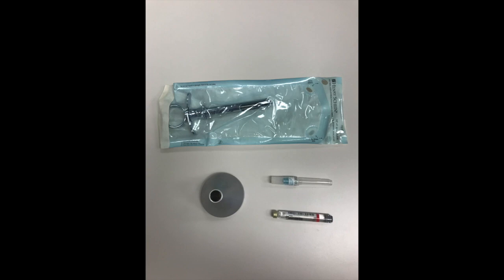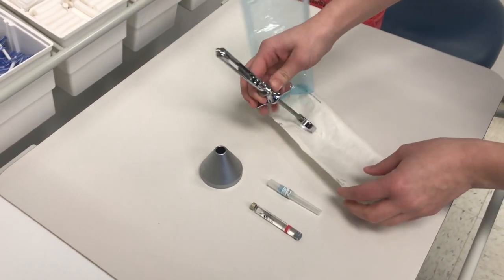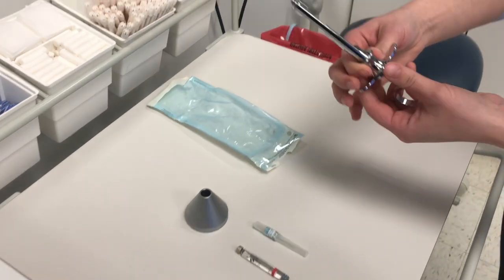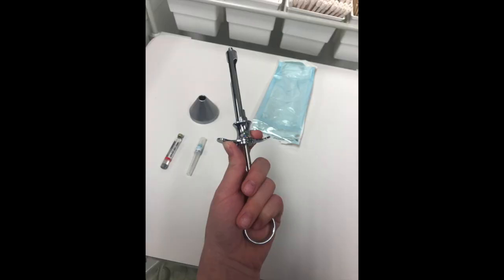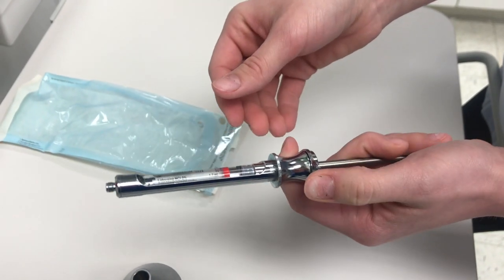Gather supplies needed. Remove the syringe from the autoclave pouch and inspect it to be sure it is ready to use. Hold the syringe in the left hand with your thumb and place the cartridge in the barrel of the syringe.